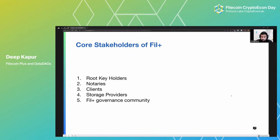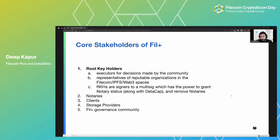Back to the core stakeholders of Filecoin Plus. Root key holders are executors for decisions made by the community on the blockchain network — they're reputable organizations in the ecosystem, effectively in the Filecoin, IPFS, and related spaces. They're signers on a multi-sig that has the power to invent data cap and issue it to notaries. Notaries are other addresses on the network flagged with the identity of a verifier. The community figures out who the notaries are, and root key holders execute those decisions on behalf of the community — assigning the value of data cap to a notary and the status of being a notary on the network.